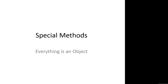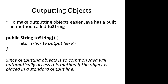With that in mind, let's dive into our PowerPoint presentation on special methods. I like to start by saying: everything is an object. The first thing we're going to talk about is outputting objects. To make outputting objects easier, Java has a built-in method called toString. This method is located in the object class. Since outputting objects is so common, Java will automatically access this method if the object is placed in a standard output line.